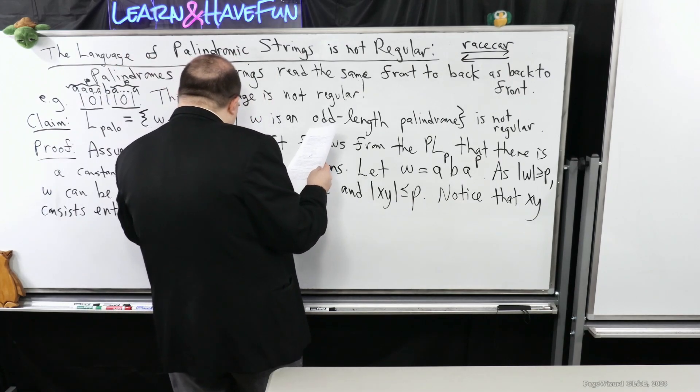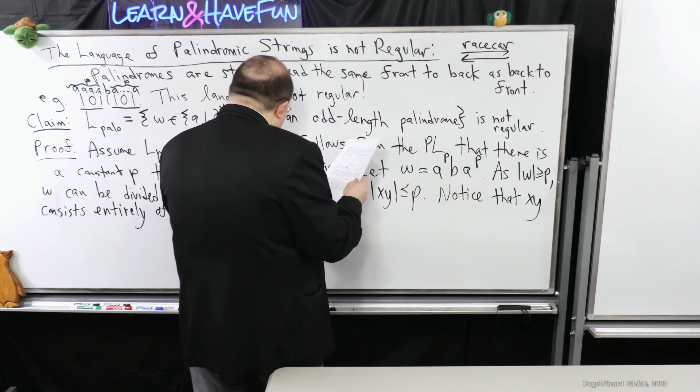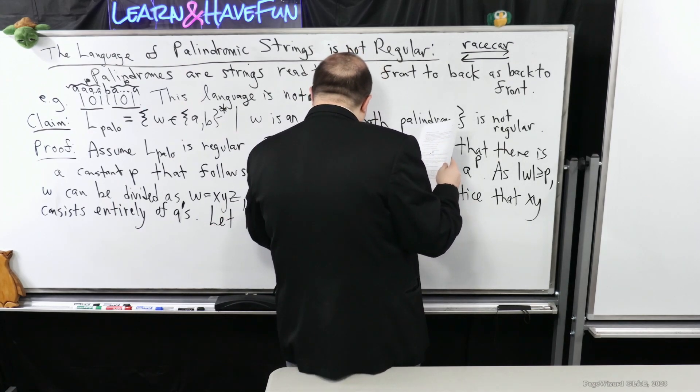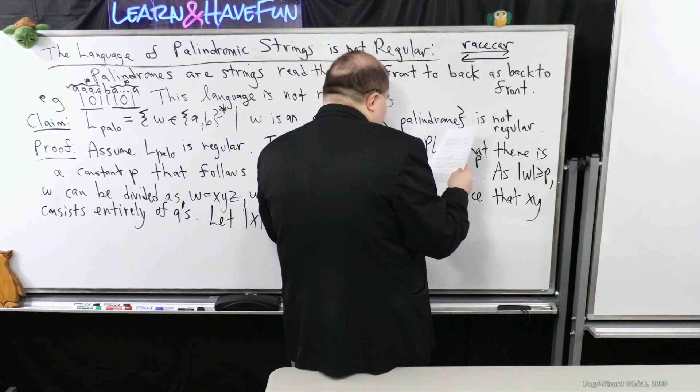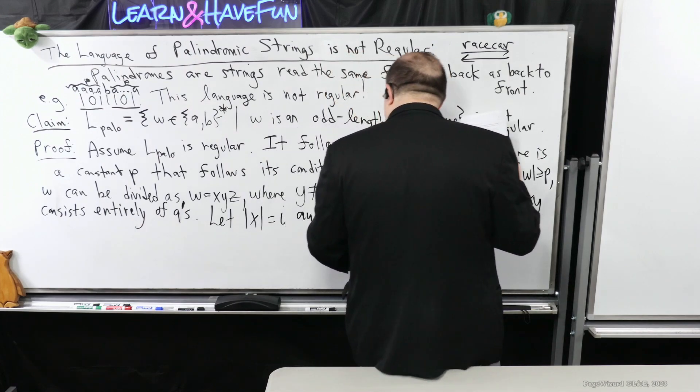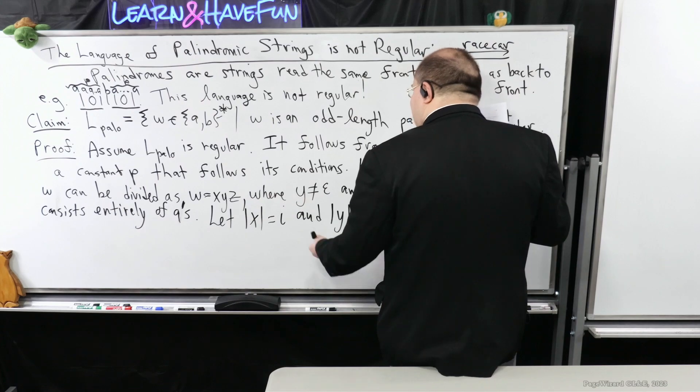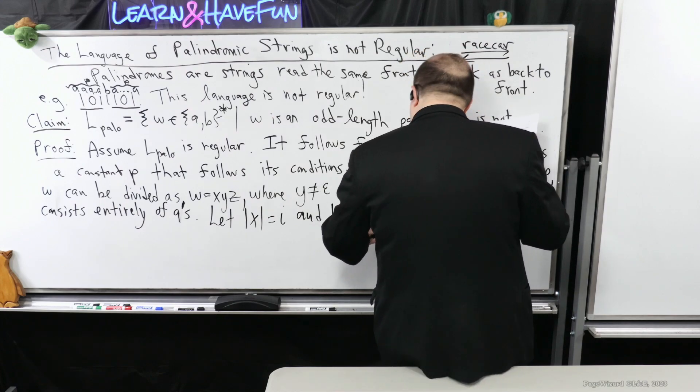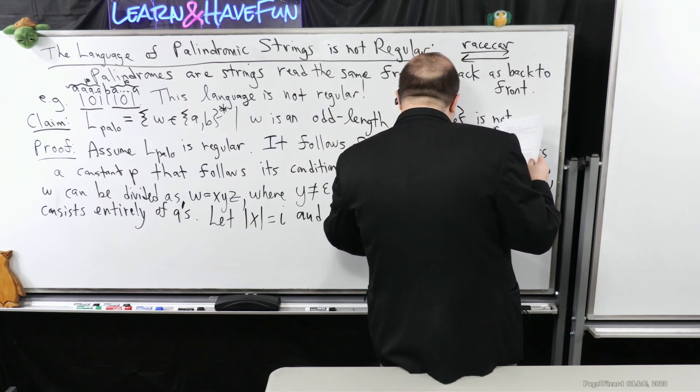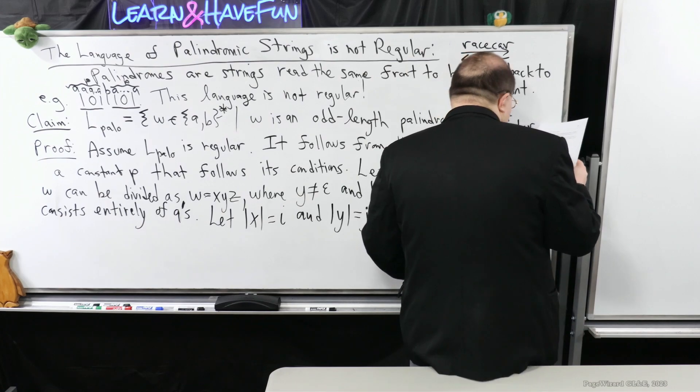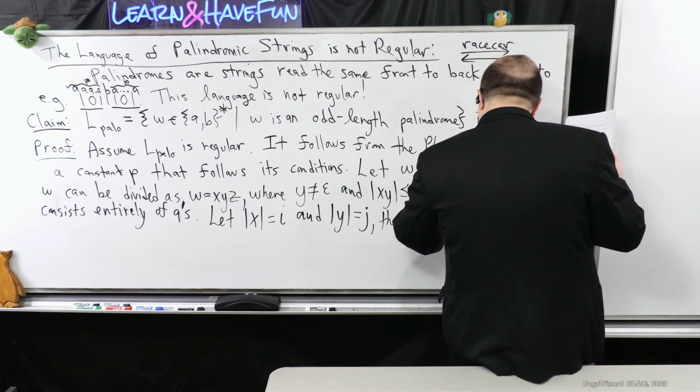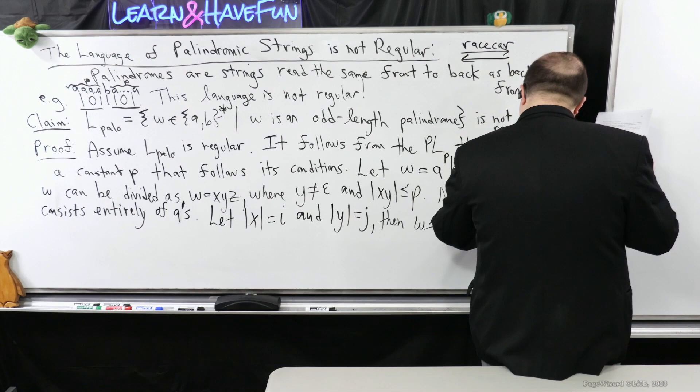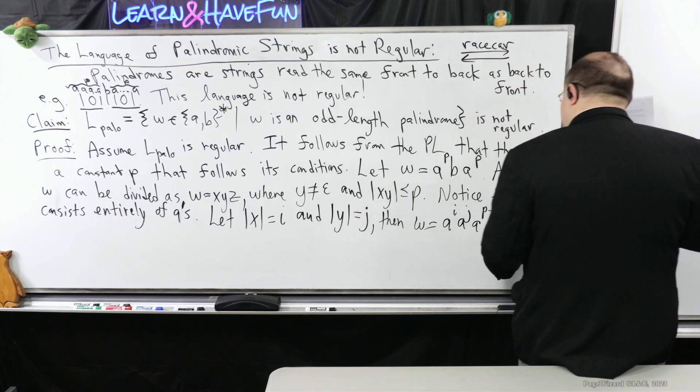So what I'm going to do is I'm going to let the length of X be i. I'm going to adopt something slightly different so that you can see how I could write out the form of the string. Remember, I don't know what the length of X is. I don't know what the length of Y is. So I'm just going to give them names.